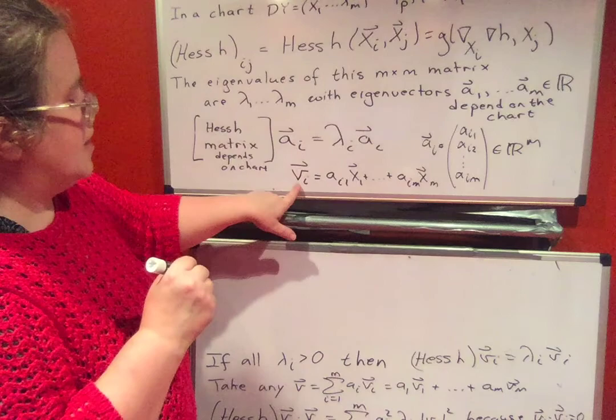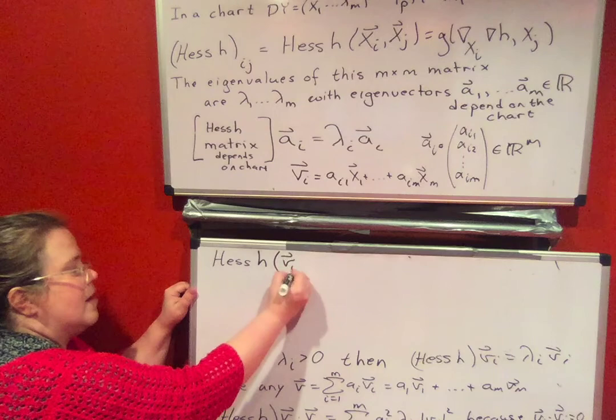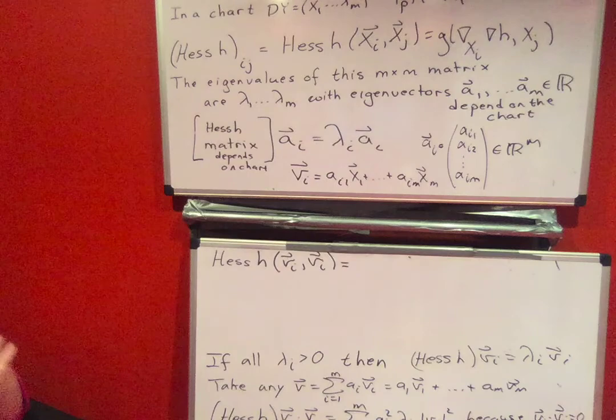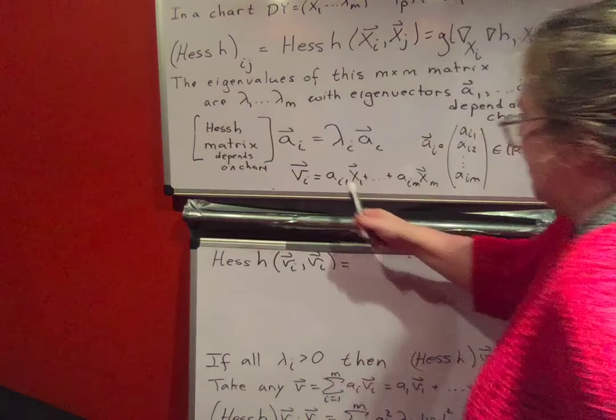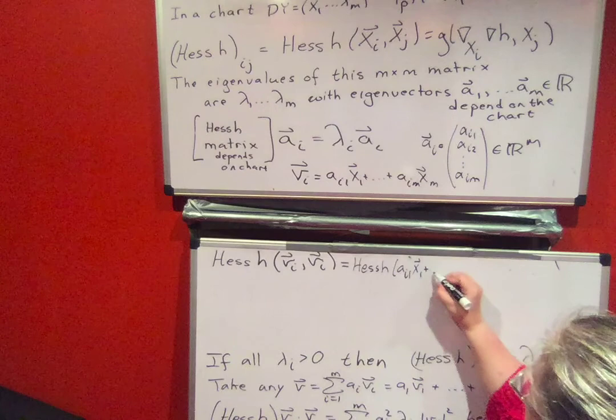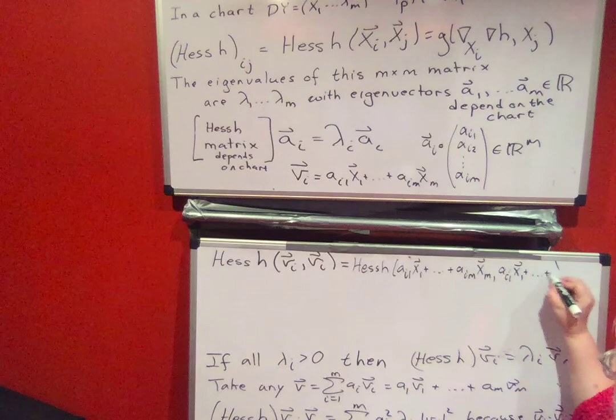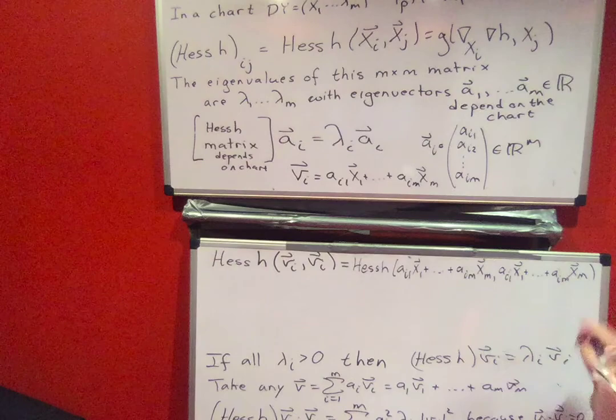We still need to remember what our Hessian h is, so keep that at the top there. So when we look at this, I want to look at Hessian h of one of these v_i's with himself. Hessian h of v_i v_i is going to equal, we should write it each with a sum. So that will equal, I'm going to now write just the sum out. So this will be Hessian h of a_i1 x_1 plus dot dot dot plus a_im x_m, comma a_i1 x_1 plus dot dot dot plus a_im x_m.